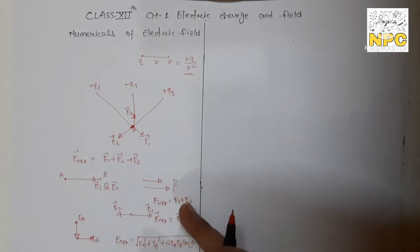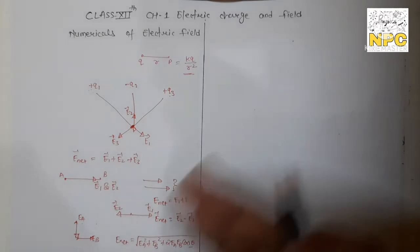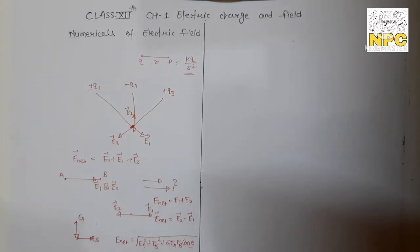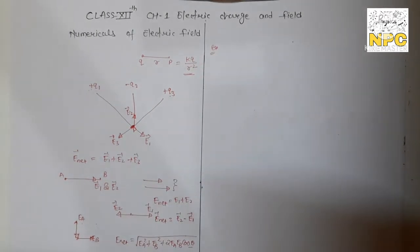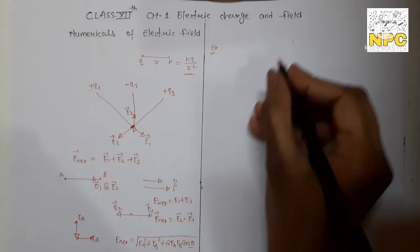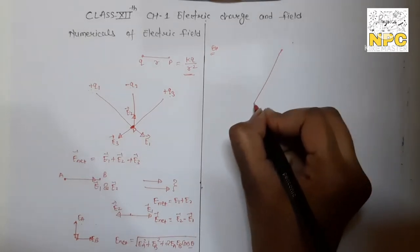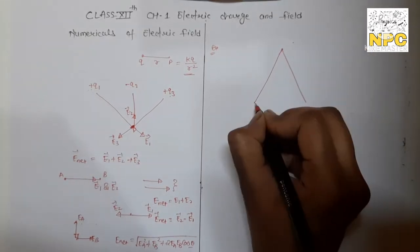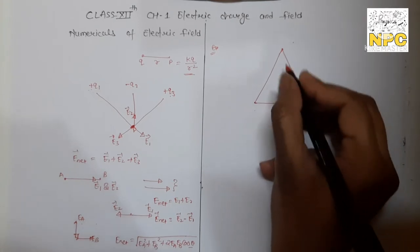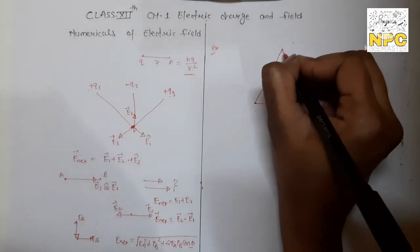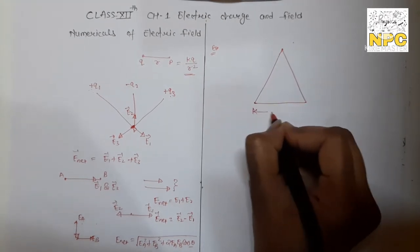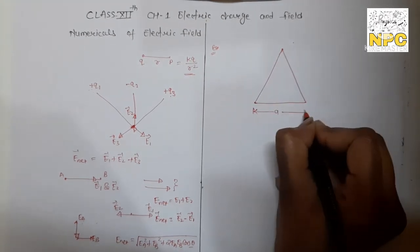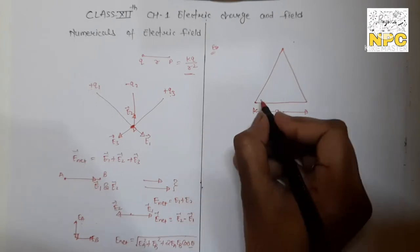Now let's start with the numericals. Question number one: you have an equilateral triangle. We all know that in an equilateral triangle, all sides are equal — let's call the side length A. So AB = BC = CA. All three angles are equal: since they sum to 180°, each angle is 60°. This is basic knowledge about equilateral triangles.